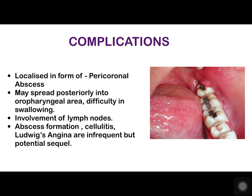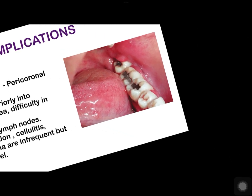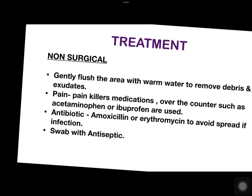Complications of pericoronitis: localized in the form of a pericoronal abscess which may develop. It may spread posteriorly into the oropharyngeal area, causing difficulty in swallowing. Involvement of lymph nodes, abscess formation, cellulitis, and Ludwig's angina are infrequent but potential sequelae of pericoronitis.